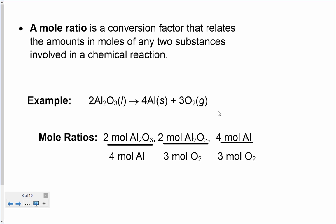We can create mole ratios between any two things in this reaction. The ratio of aluminum oxide to aluminum is two to four. Aluminum oxide to oxygen is three to two. And aluminum to oxygen is four to three.